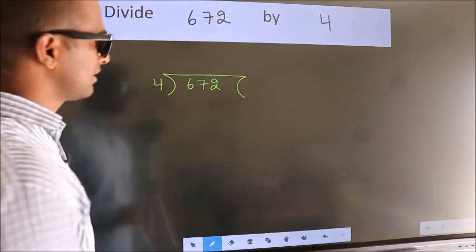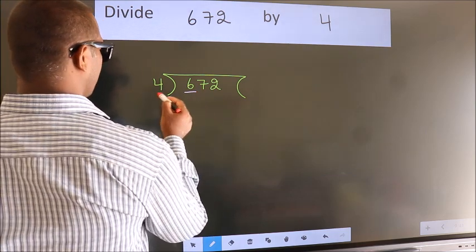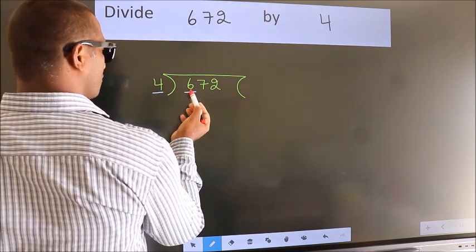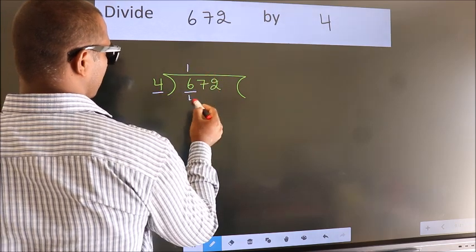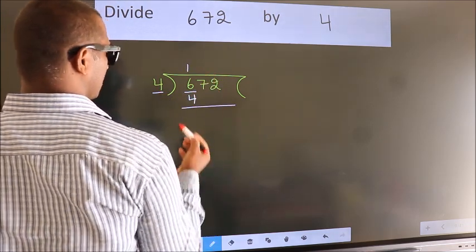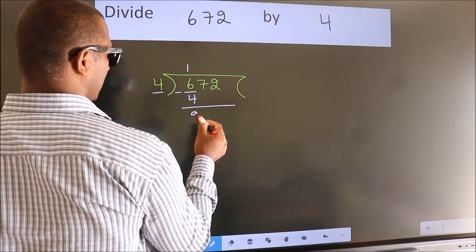Next, here we have 6, here 4. A number close to 6 in 4 table is 4 once 4. Now, we should subtract. We get 2.